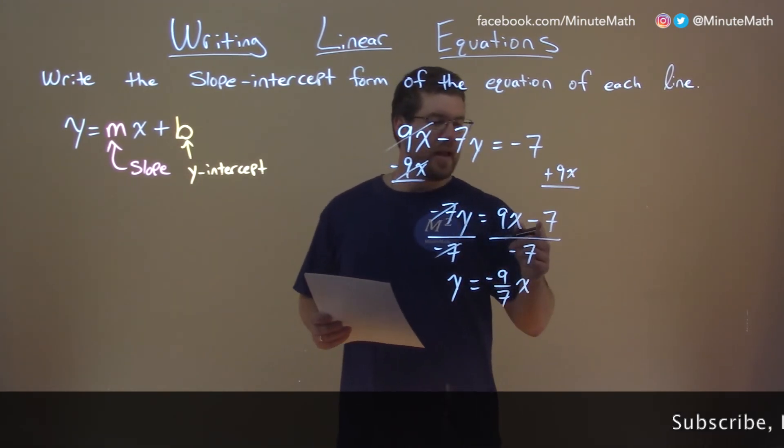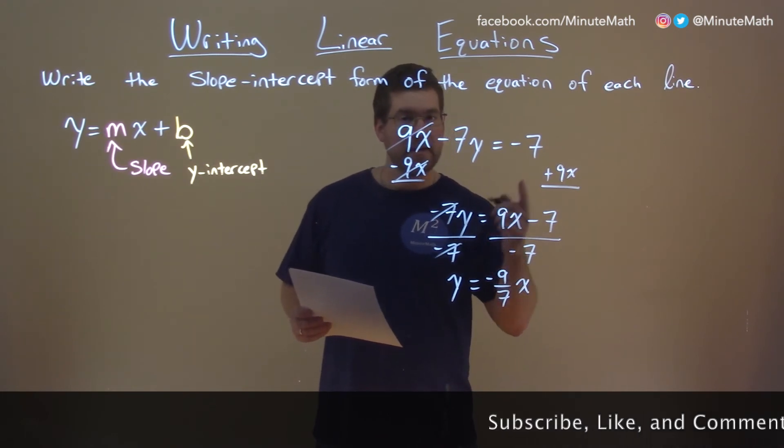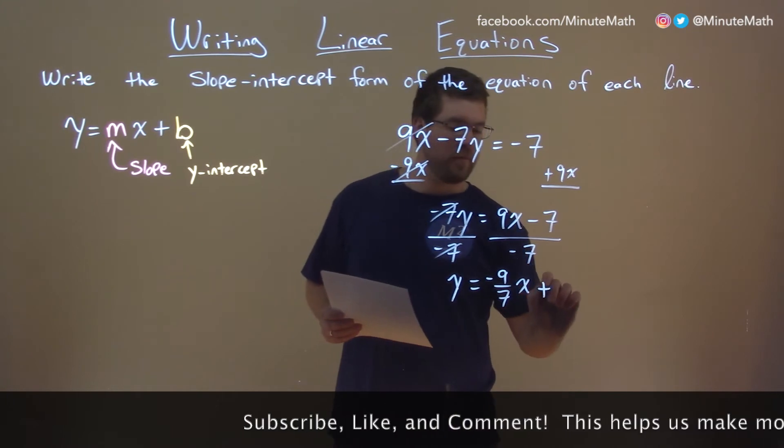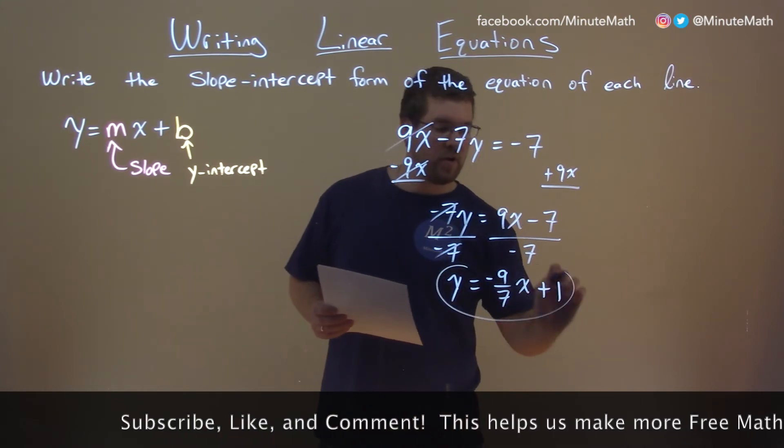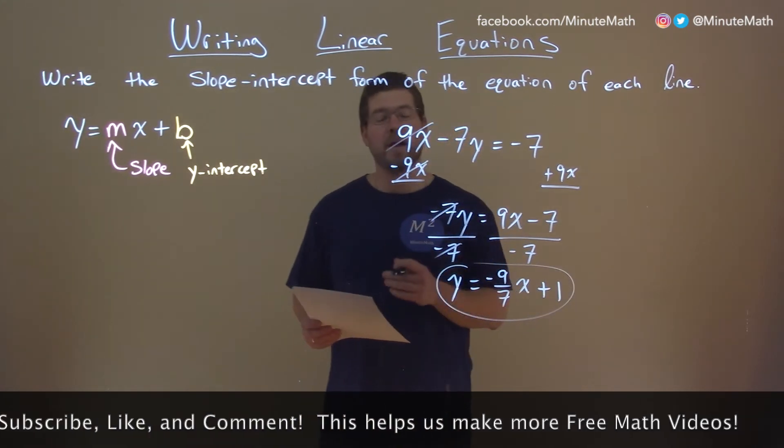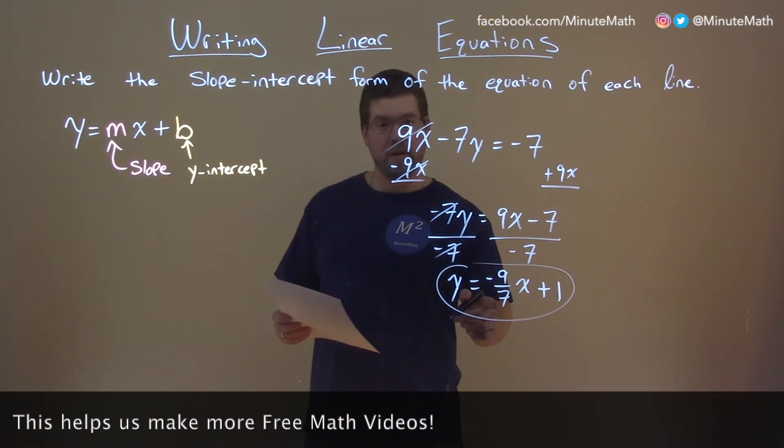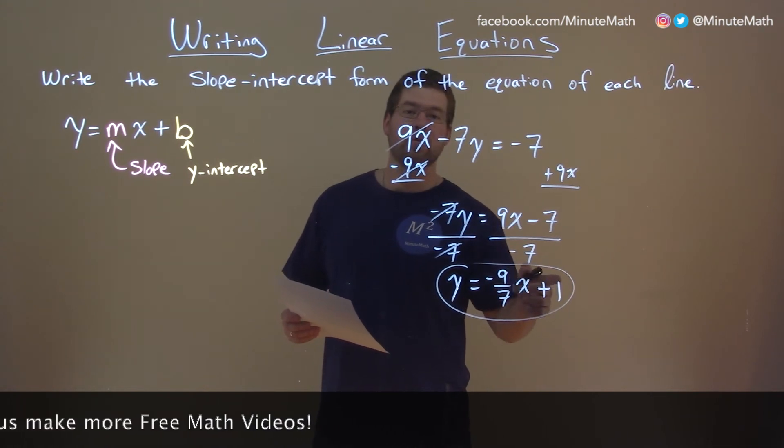Then, negative 7 divided by negative 7. Negative divided by negative is positive. 7 divided by 7 is 1. So we have plus 1 here. That's our y-intercept and now we have our answer in slope-intercept form: y equals negative 7 over 9x plus 1.